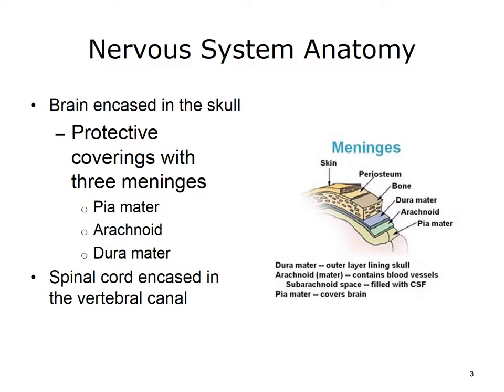Let's start with a brief overview of the anatomy of the nervous system. The nervous system is composed of two major divisions: the central nervous system and the peripheral nervous system. The central nervous system is composed of the brain and the spinal cord. The brain is encased in the skull, and the spinal cord is encased in the vertebral canal.